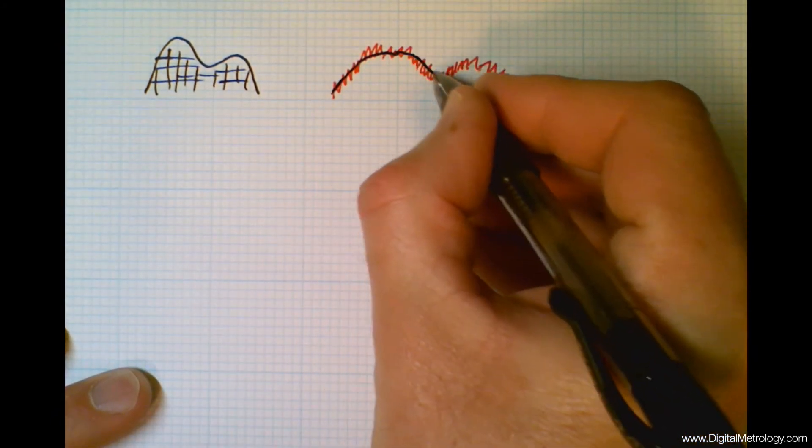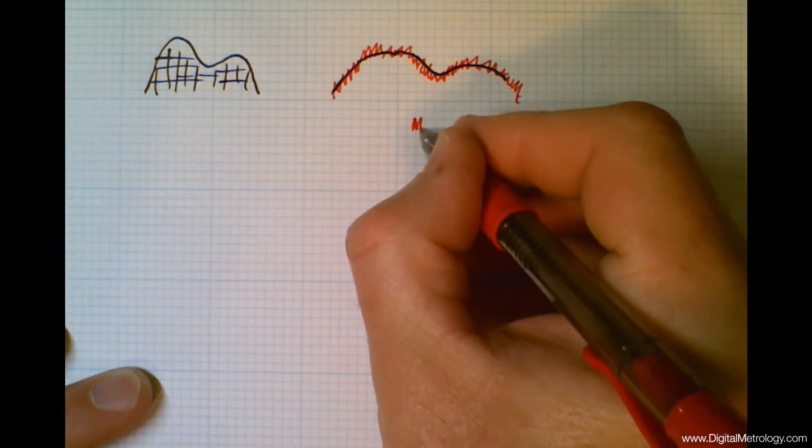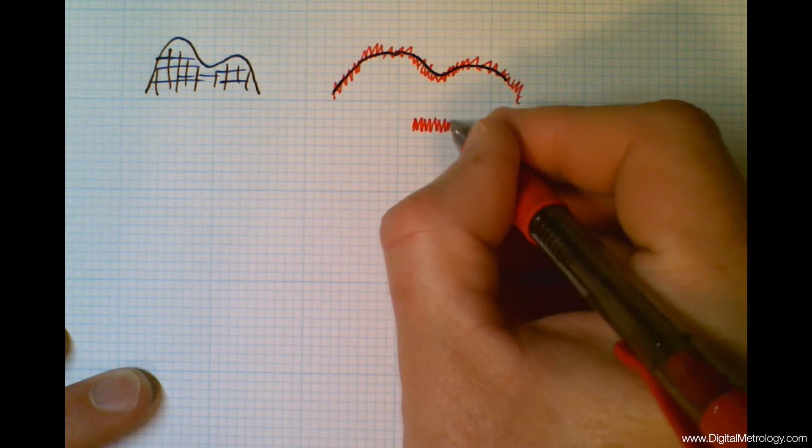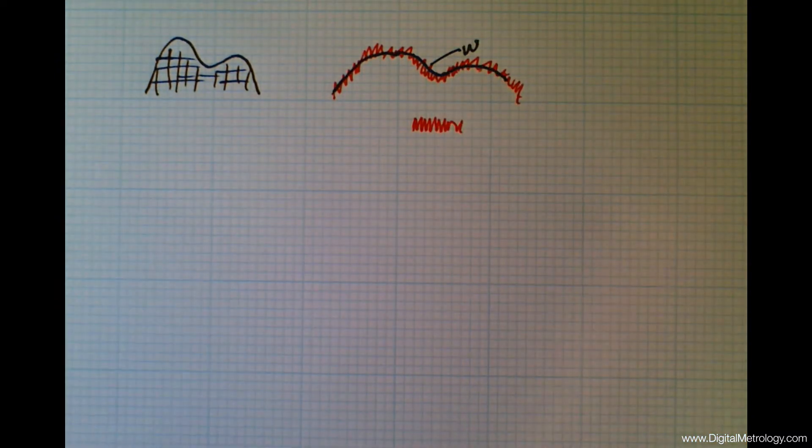For this case here on the right, the humps themselves are much, much bigger than the kinds of features that we would consider roughness. The humps, being waviness, dominate this surface.